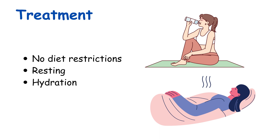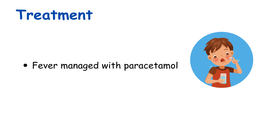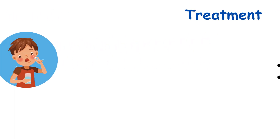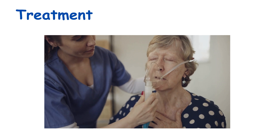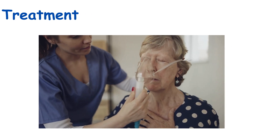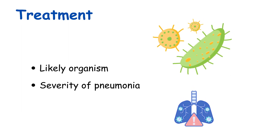In treatment of community-acquired pneumonia, generally there are no restrictions in diet. It is important to have rest appropriate to the level of illness. Hydration is important in the severely ill patient. Fever can be managed with paracetamol. It is important to avoid cough suppressants; if a syrup is requested, a mucolytic such as bromhexine can be prescribed. Oxygen is useful in a breathless patient.